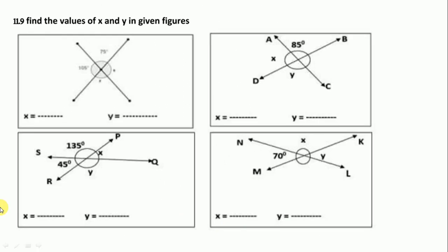In 11.9, find the value of x and y. The figure shows values of 75 and 105. Here x and y are marked. So x is vertically opposite to 105, so we write x = 105. And 75 is vertically opposite to angle y, so we write y = 75 degrees.